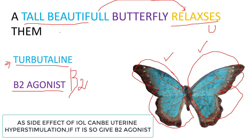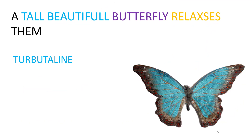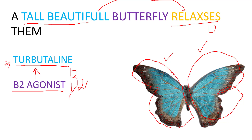Tall beautiful butterfly relaxes them — meaning when there is uterine hyperstimulation, give the beta-2 agonist terbutaline to cause uterine relaxation. Just memorize these lines, take a screenshot of these images in your mind, and you are done with all the pharmacological drugs used in the induction of labor. I hope you enjoyed the video — like it if you liked it, share it, and subscribe to the channel. Thanks!